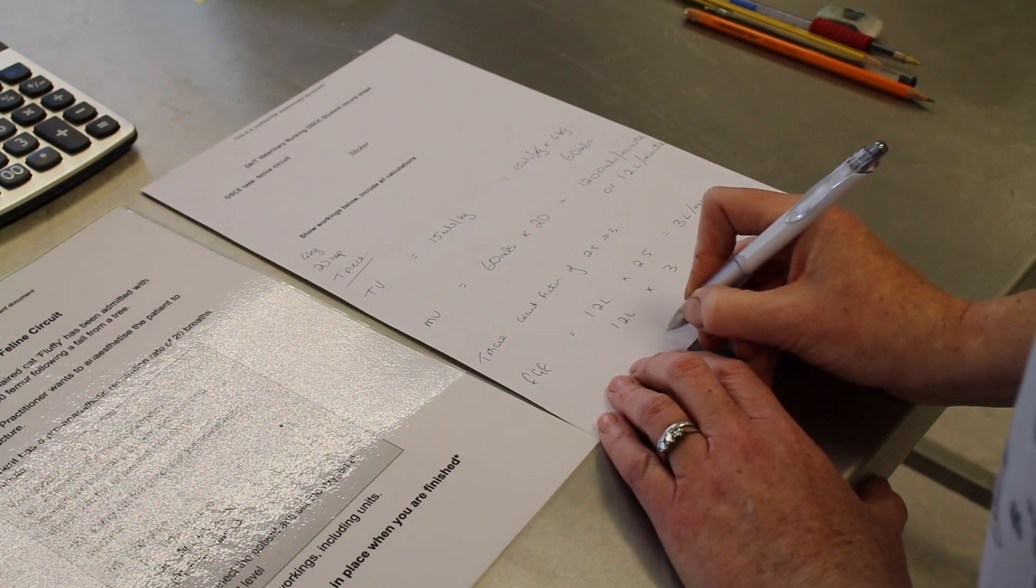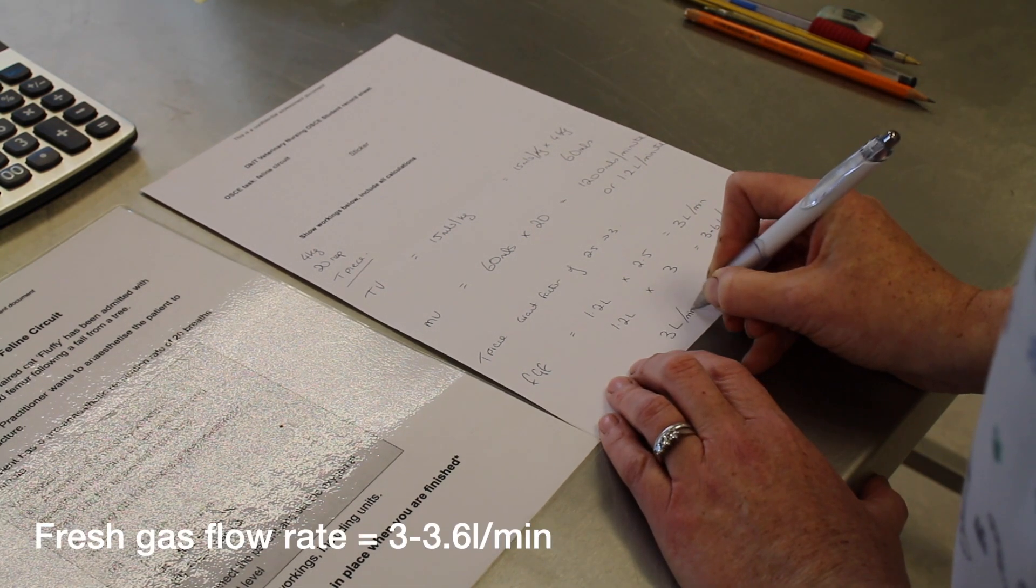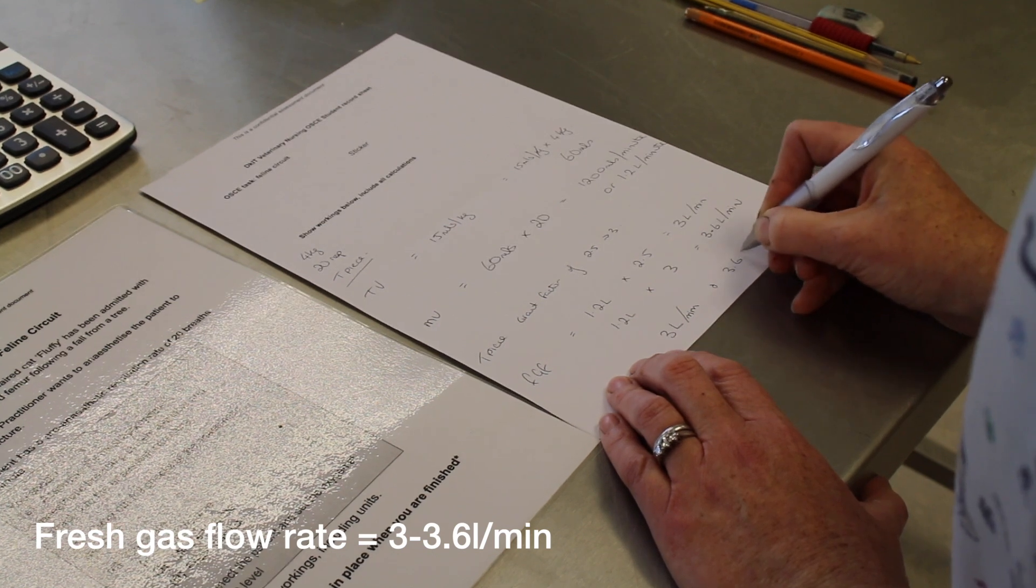So in this instance, we need to set our oxygen between 3 liters per minute and 3.6 liters per minute.